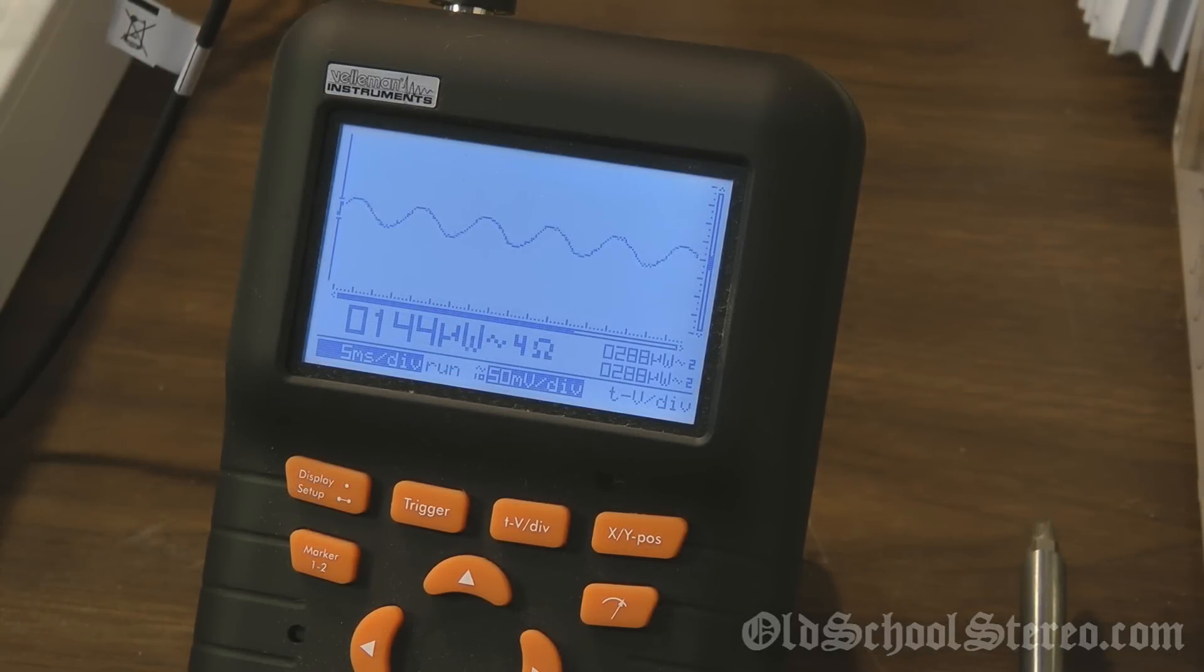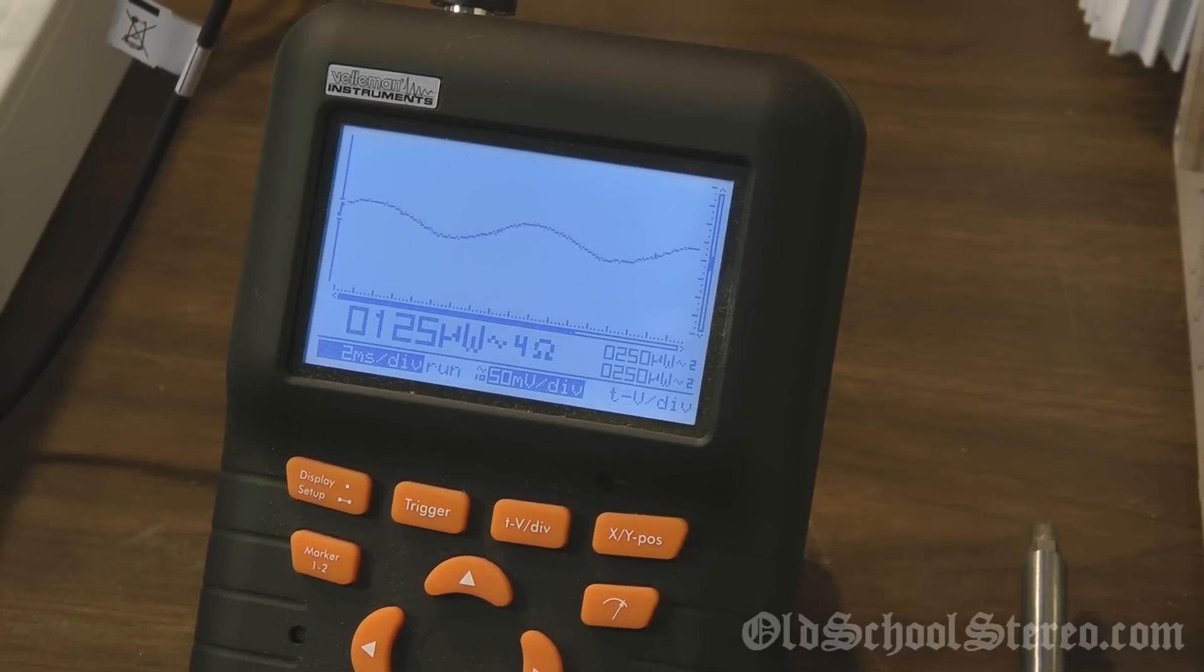Alright, we have the PBR X1 connected up to a 4 ohm load and let's check out the output. We're doing a 100 Hertz test tone and everything is flat. The gains have been set, all that good stuff, so I'm going to zoom in here on the oscilloscope so you can see what kind of output we get.